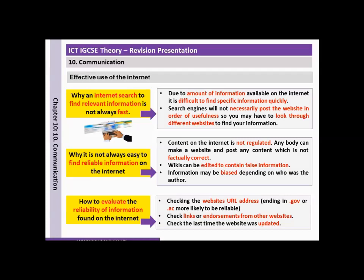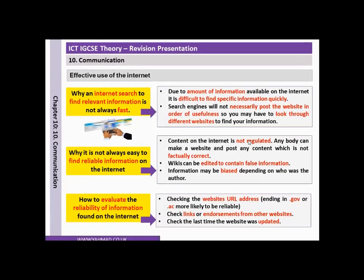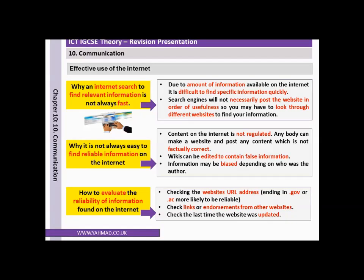Search engines will not necessarily list websites in order of usefulness, so you may have to look through different websites to find your information. Content on the internet is not regulated — anybody can make a website and post content that is not factually correct, wikis can contain false information, and information may be biased depending on the author. To evaluate reliability, check the URL — endings like .gov or .ac are more likely to be reliable, check links or endorsements from other websites, check when the website was last updated, and consider whether it was recommended by a trusted source.